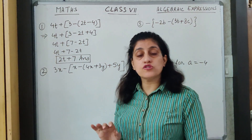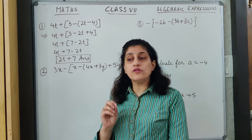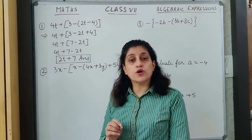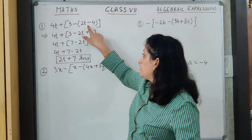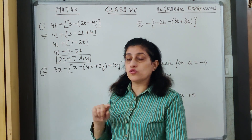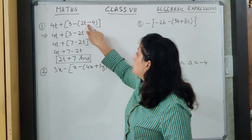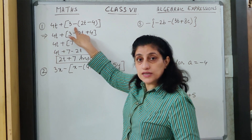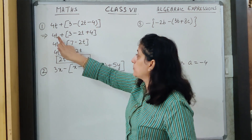Whenever we have questions of simplification, whether in arithmetic or in algebra, we have to follow the BODMAS rule. According to BODMAS, the innermost bracket is solved first. I see this innermost bracket — 2t minus 4 — with a minus sign outside the bracket. I will begin with this first.